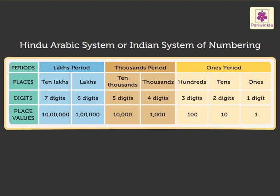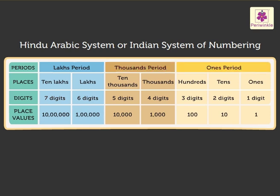Look at this table. It shows the periods, the places and the place values. Five-digit numbers are placed in the ones and the thousands periods. The six and seven-digit numbers are placed in the ones period, the thousands period and the lakh period. According to the Indian place value system, the ones period consists of the places ones, tens and hundreds.